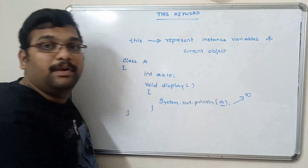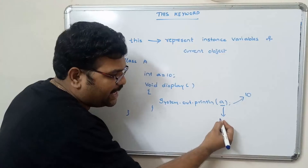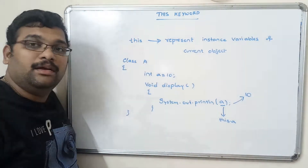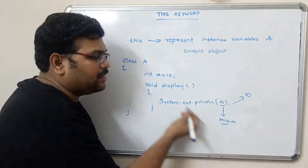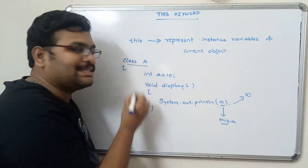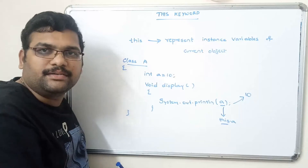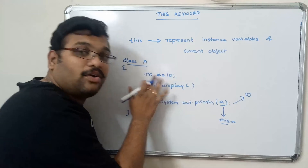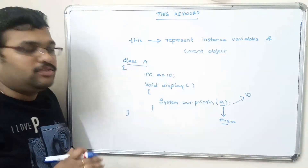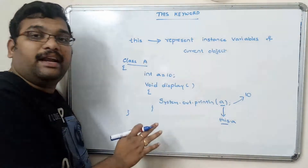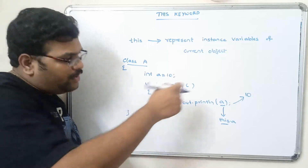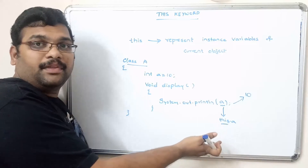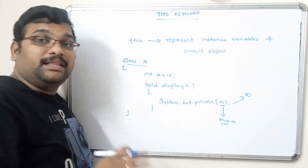When we just write the variable name 'a', the compiler will treat it as 'this.a'. 'this.a' represents that the variable belongs to the current object or current class. By default it will be treated as 'this.a', but the user does not need to explicitly write 'this.a' in every case.